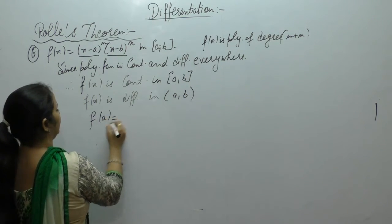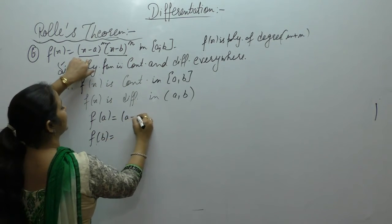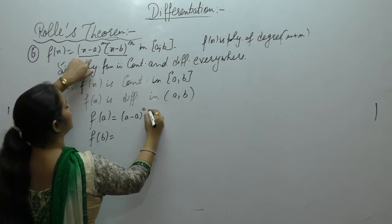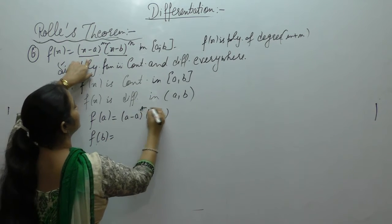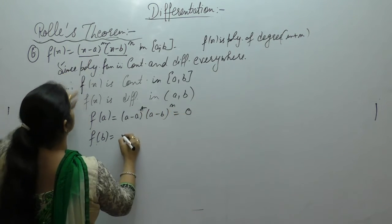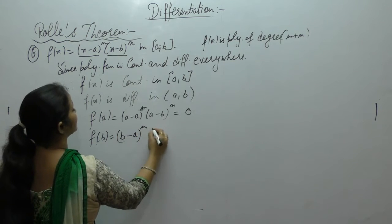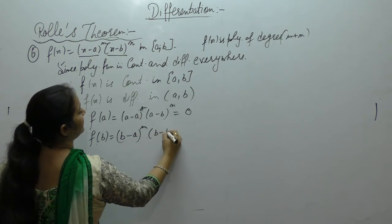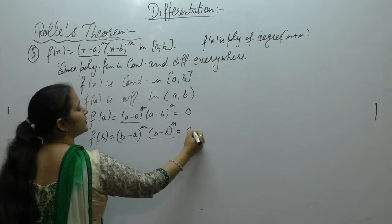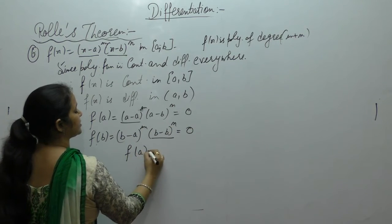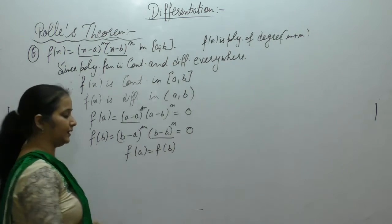Now, f(a): (a-a) = 0, so 0 into something is 0. f(b): (b-b) = 0, so again 0 into something is 0. Therefore, f(a) equals f(b).